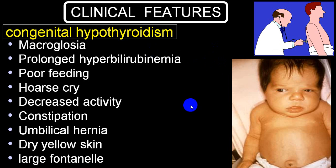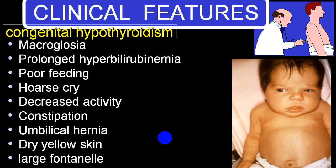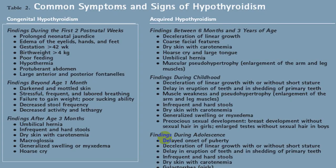In a child with congenital hypothyroidism: macroglossia, prolonged jaundice (hyperbilirubinemia), poor feeding, hoarse cry, decreased activity, mental retardation, constipation, umbilical hernia, dry yellow skin, large fontanels, delayed skeletal maturation, delayed teeth formation, delayed development, and stunted growth — all partial or complete features of congenital hypothyroidism.